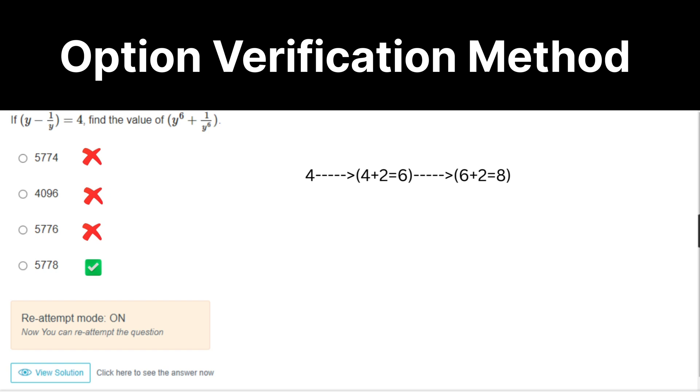y minus 1 by y equal to 4. y power 6 plus 1 by y power 6. Again, go for unit digit. y cube minus 1 by y cube equal to k cube plus 3k, which means 4 plus 2, which is 6. Now k square plus 2, which means 6 square plus 2. Unit digit will be 8. That's it.